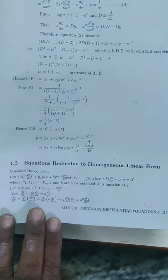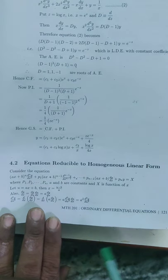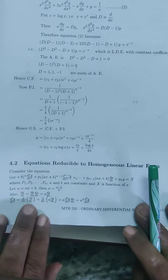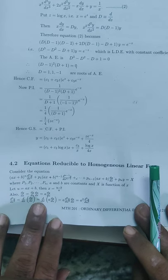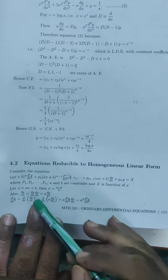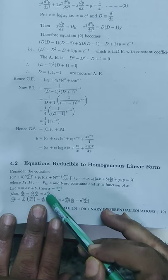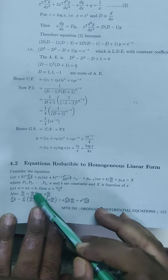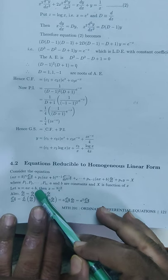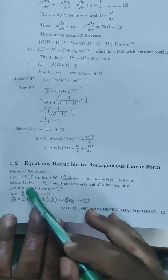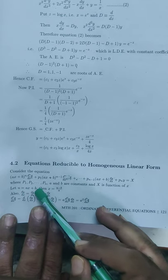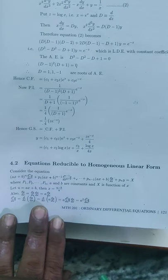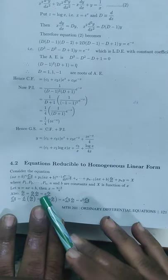Let u = ax+b, then x = (u−b)/a. Also, dy/dx = (dy/du)·(du/dx). Differentiating u with respect to x: du/dx = a, since b is constant with derivative 0 and the derivative of x is 1. We get du/dx = a.